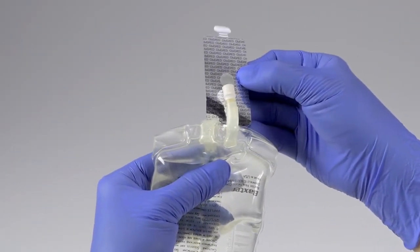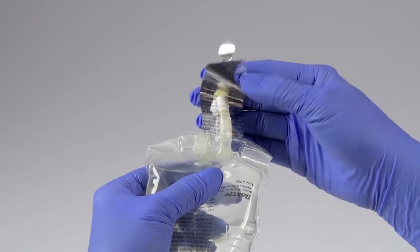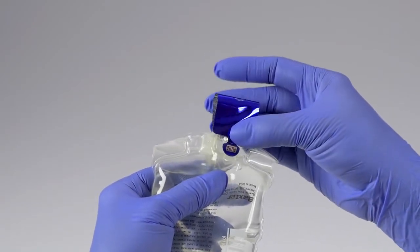Now, align the IV port with the circle on the sterile surface of the seal. Fold the seal over the top of the injection port.